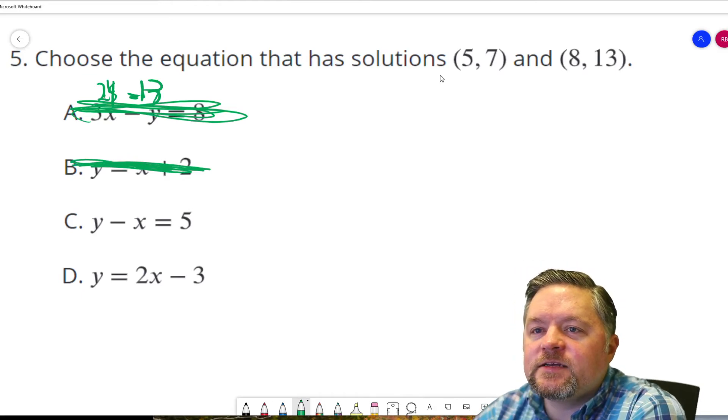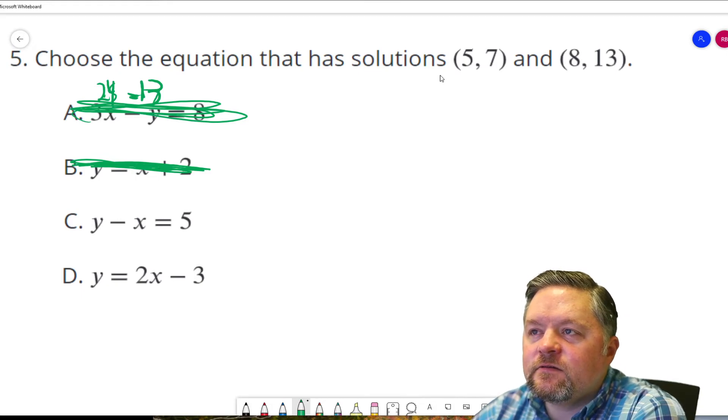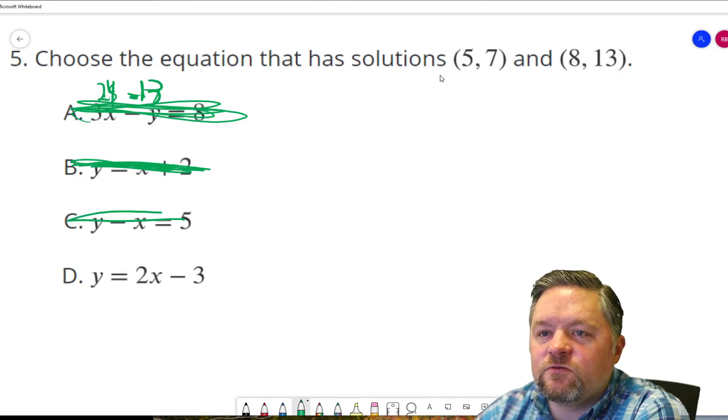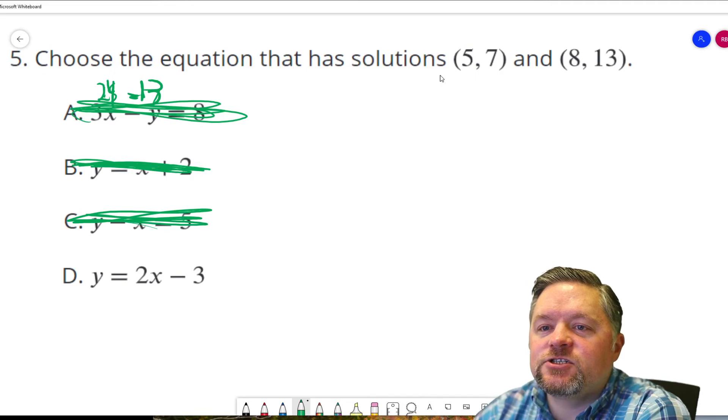Y minus x equals 5. Plug in 5, 7. 7 minus 5 is 2. So, it's sure looking like this bottom one. Let's check.